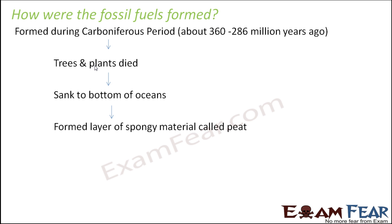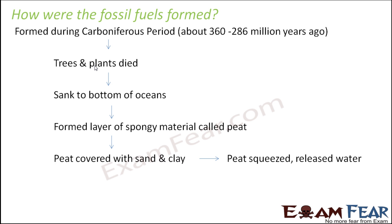Most of these dead plant and animal remains went to the bottom of the ocean. Over a period of time, they formed a layer of spongy material called peat. As they went to the bottom, a lot of other things like sand, mud, clay, stones, and rocks started getting deposited over the dead remains. After some time, those dead plant remains formed a layer called peat, and this peat, as it got covered with more and more rocks, stones, sand, and clay, got squeezed.